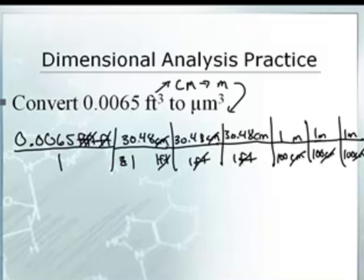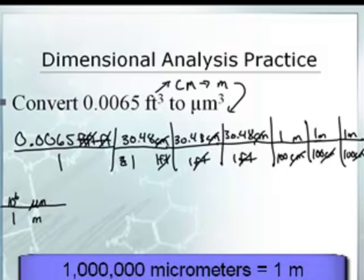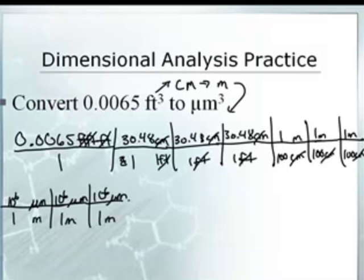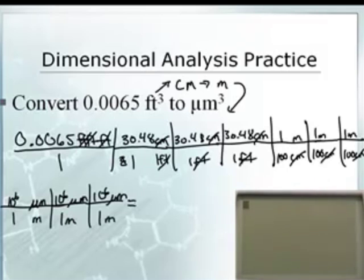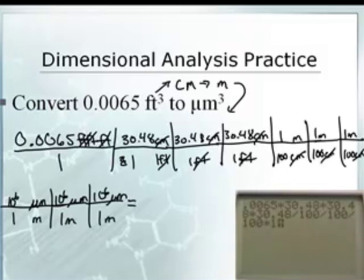This is a long problem — Mr. Bergman picked this. We've still got to keep going. Now I want to go to micrometers, so meters to micrometers. There's a million — ten to the sixth — micrometers in a meter. That's on the metric table. So ten to the sixth micrometers in a meter, and lastly ten to the sixth micrometers in one meter. This one's going to be tricky on the calculator. So: 0.0065 times 30.48 times 30.48 times 30.48, divided by 100, divided by 100, divided by 100, times one E6, times one E6, times one E6.